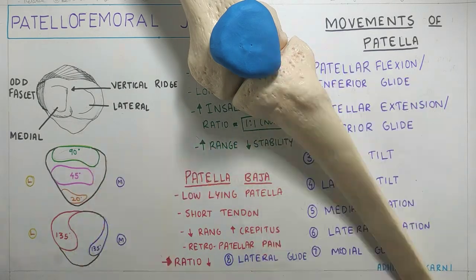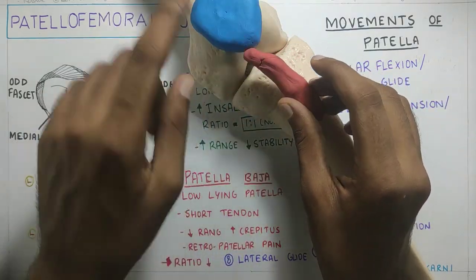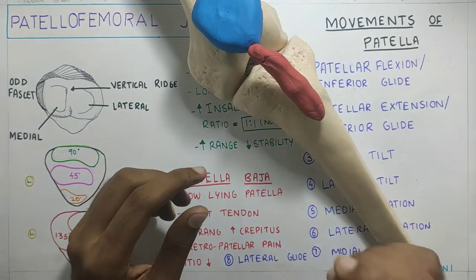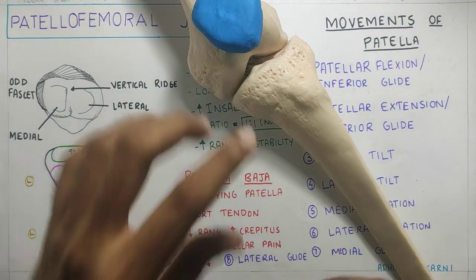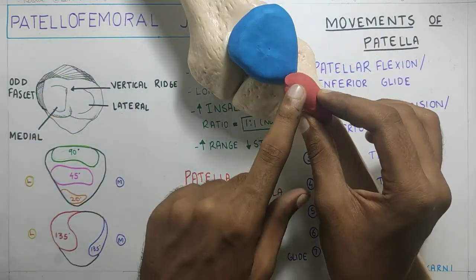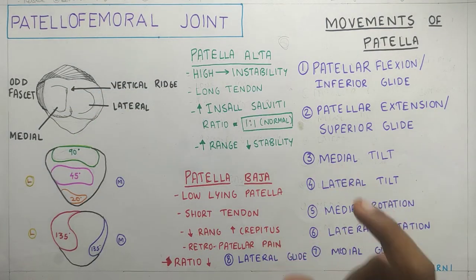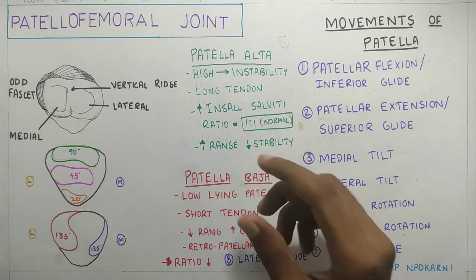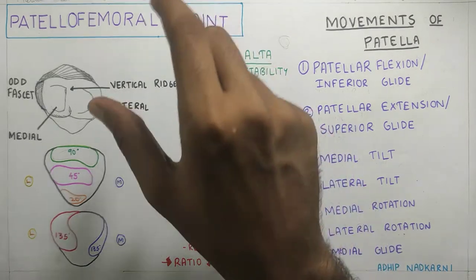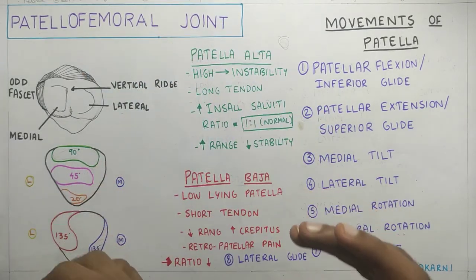In patella alta, this ratio is increased — the tendon is longer than the patella. Because the tendon is longer, the patella is placed more superiorly in the patellofemoral joint. During patella alta, the patella is very unstable due to the long tendon and the highly placed patella. The range is also increased since the patella can travel further inferiorly, but at the cost of stability.